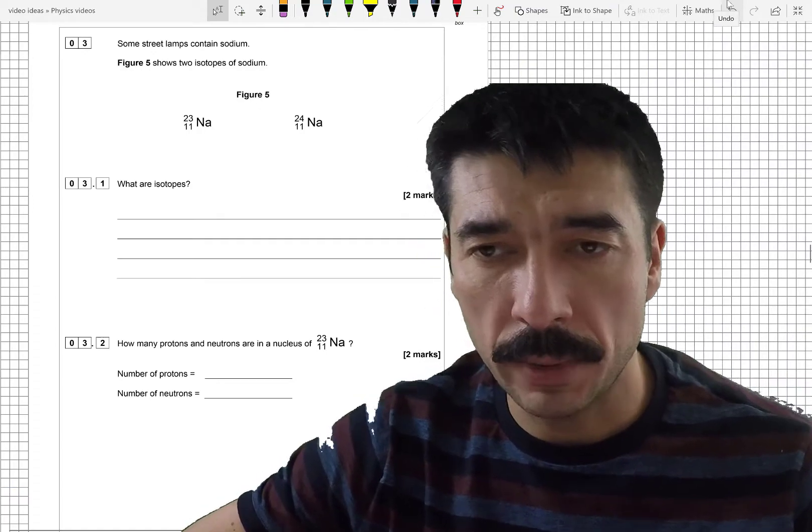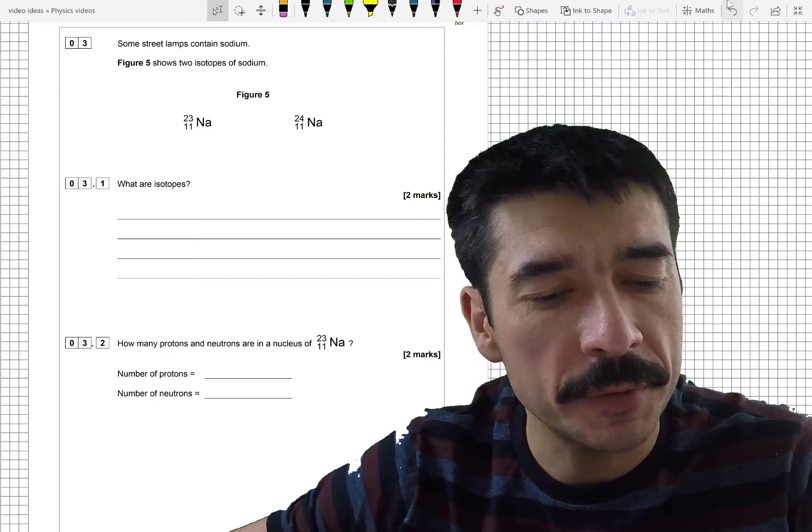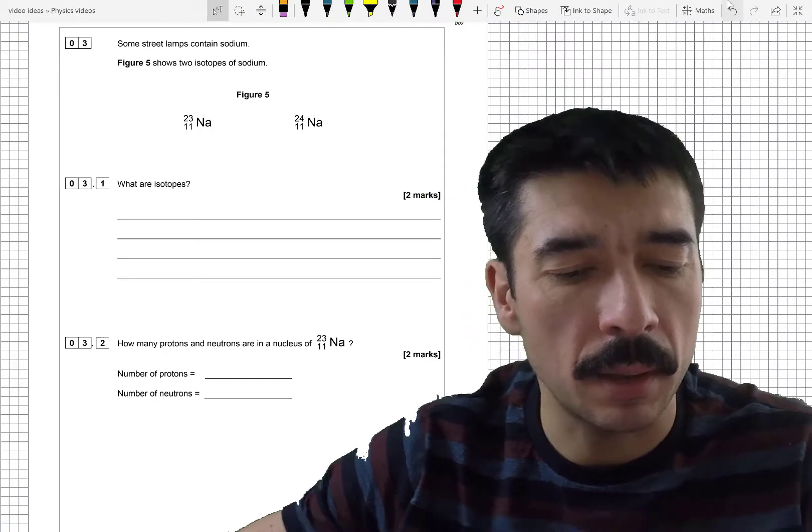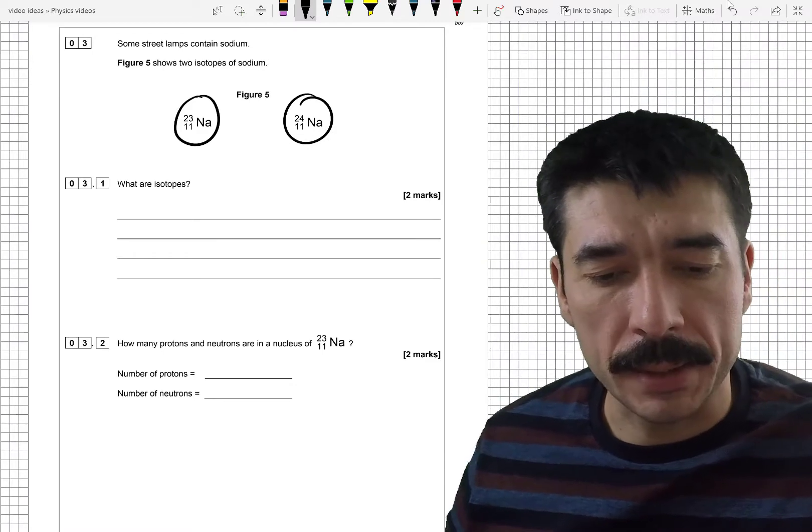Okay, question three. So some street lamps contain sodium. Figure five shows two isotopes of sodium. Okay, step one and step two. What are isotopes?